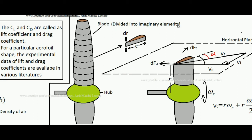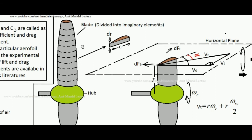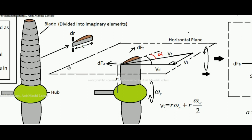Suppose this is the blade of the wind turbine. Using a horizontal plane we cut this blade — you can see this cut — and the cross-sectional view reveals an aerofoil shape. This is the chord from leading edge to trailing edge, and the thickness dr is the span of this aerofoil segment. So the planform area of this aerofoil segment will be dr × c. Now suppose wind is coming in the axial direction with velocity V_d — this is the velocity vector of the wind.